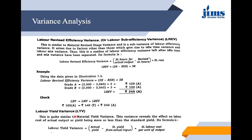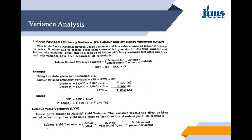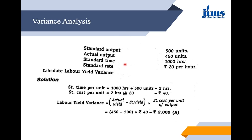Labor yield variance is quite similar to material yield variance. This variance reveals the effect on labor cost of actual output or yield being more or less than the standard yield. The formula is: (Actual Yield minus Standard Yield from Actual Input) into Standard Labor Cost per unit of output. From the given data, standard time per unit is 2 hours, standard cost per unit is 2 hours at rupees 20, giving rupees 40 per unit. Putting in the values gives an adverse variance of 2,000 rupees.